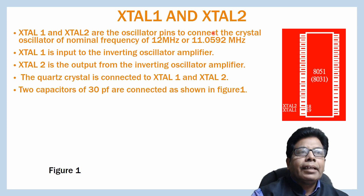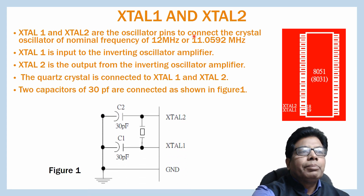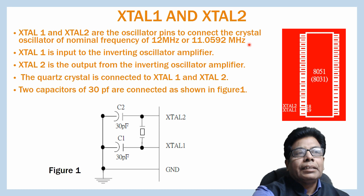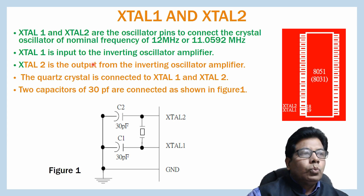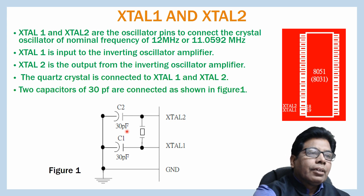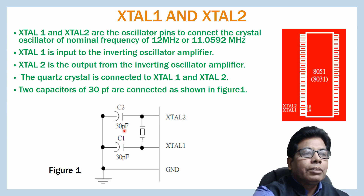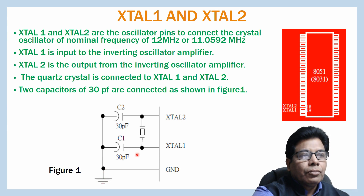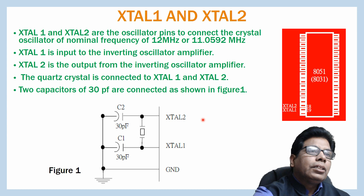XTAL1 and XTAL2 are the oscillator pins to connect the crystal oscillator of nominal frequency of 12 MHz or 11.0592 MHz. XTAL1 is the input to the inverting oscillator amplifier and XTAL2 is the output from the inverting oscillator amplifier. The quartz crystal is connected to the XTAL1 and XTAL2 pins, and two capacitors of 30 pF (C1 and C2) are connected with one terminal of each capacitor going to ground, as shown in the figure. This is for generation of the clock.